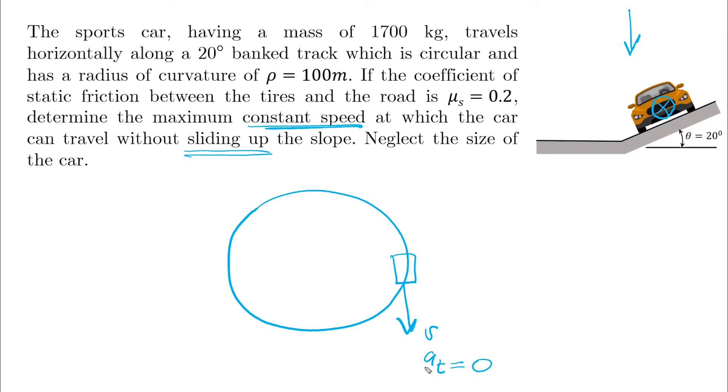Now the normal acceleration will be towards the center of the radius of curvature. And if we look at this AN on the diagram, then it will be horizontal to the left. And by doing that, now we're ready to put our free body diagram.